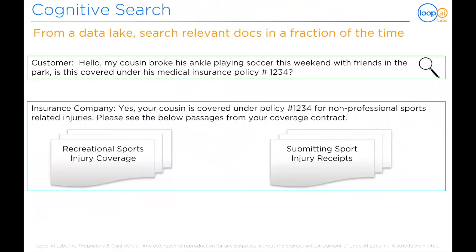Moving on to another use case: IDC data shows that knowledge workers spend about two and a half hours per day, or roughly 30% of their workday, searching for information. 60% of company executives felt that time constraints and lack of understanding of how to find information were preventing their employees from finding the information they needed. Based on a free text question, Loop Q finds the most important passages of documents where the topic is explained and presents them to the agent by relevance or confidence level from a data lake of company information.